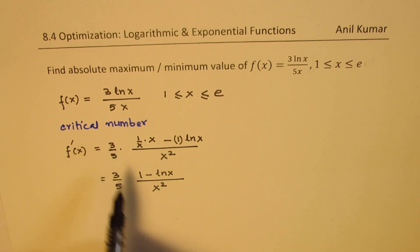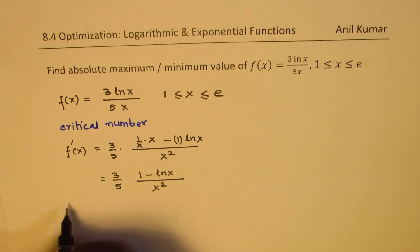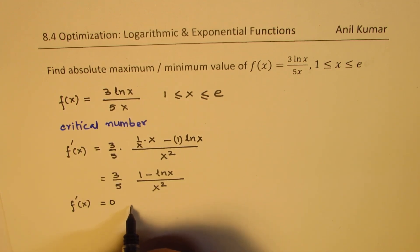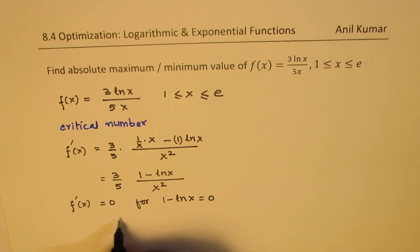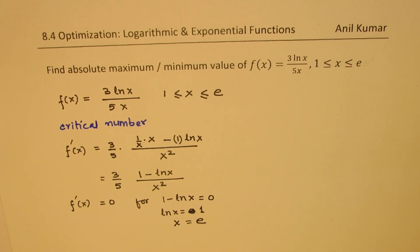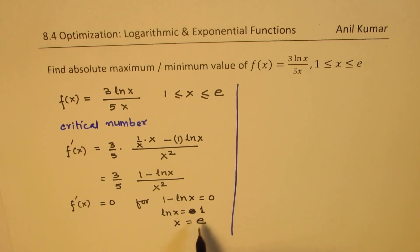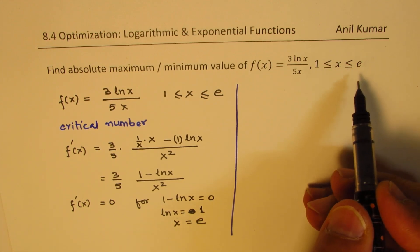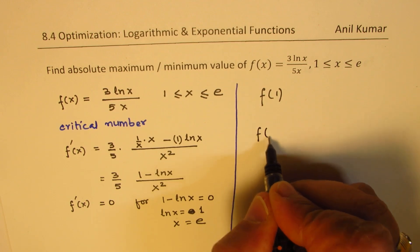From here we have one critical number in the given domain: f'(x) = 0 when 1 − ln(x) = 0, so ln(x) = 1, which means x = e. So the critical number is x = e. Now we find the values of this function at x = 1, the lower boundary, and at x = e.